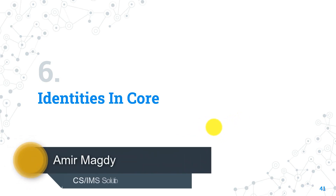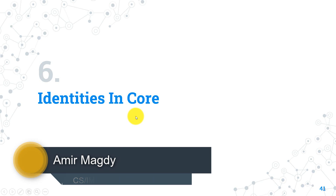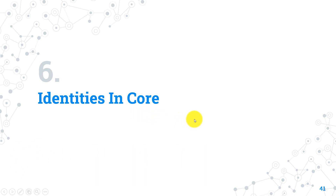Hello guys, welcome again to our CS Circuit Switching Core course. Today we are going to talk about a very important topic in our course, which is the identities in CS core networks. I consider this chapter very important because in any core interview you will be asked about the identities and their role in the network. Also, to understand the signaling flow in CS core networks, you first have to understand the roles and types of all the network identities.